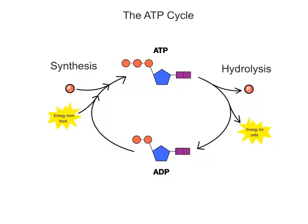Think of the overall hydrolysis and synthesis of ATP as a cycle, like a continuous renewable energy cycle where usable energy is consumed through the foods we eat and produced through ATP synthesis inside a living cell. The hydrolysis of ATP makes the energy available for use inside the cell.